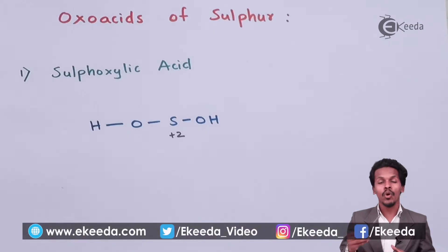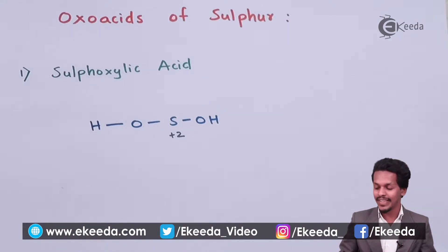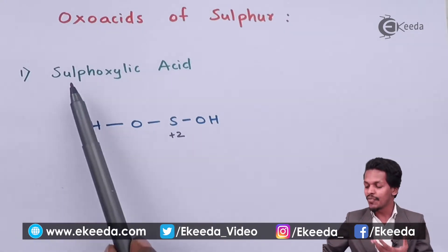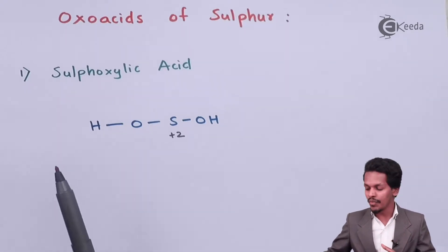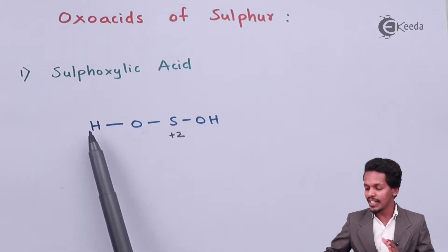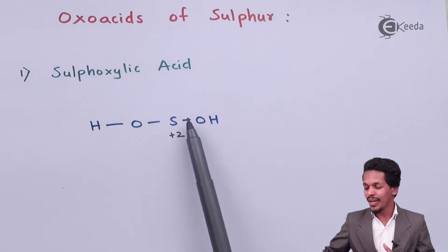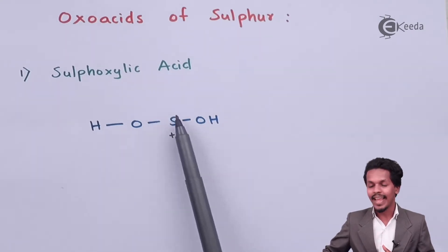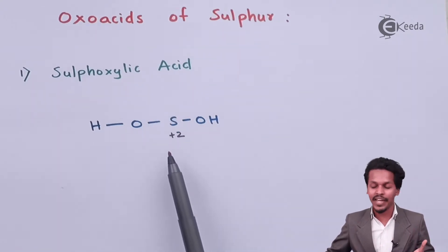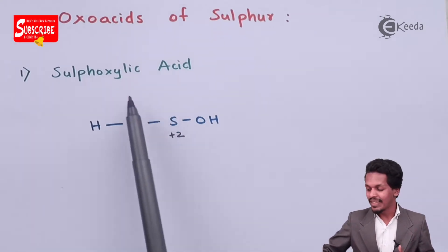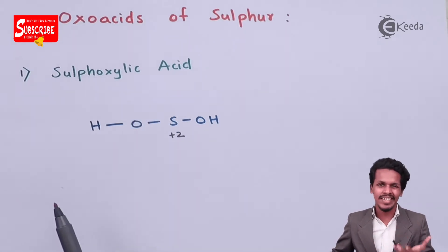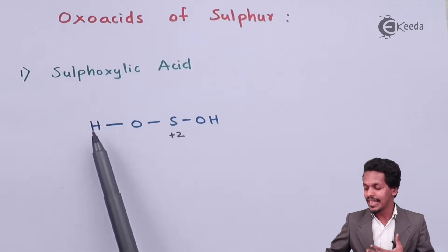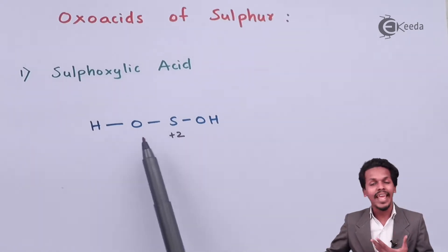Starting with the first one, that is sulfoxylic acid. The structure in this case is HOSOH, where sulfur has an oxidation state of plus 2. This gives us the molecular formula H₂SO₂.